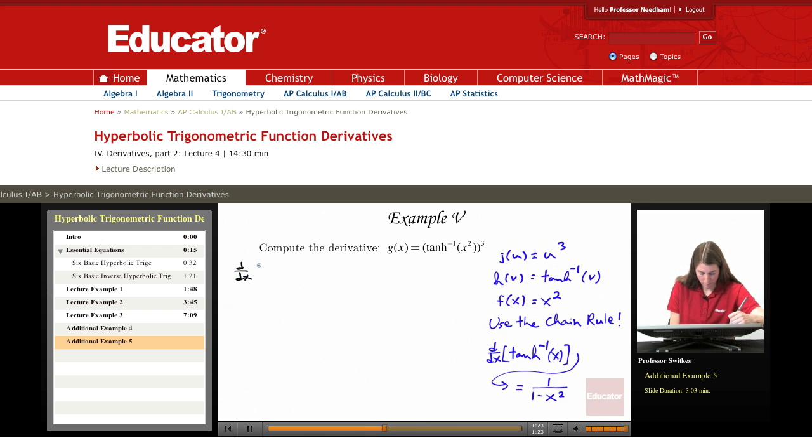we're computing derivative of inverse hyperbolic tangent of x squared whole thing cubed. And so by the chain rule, we'll have derivative of the u cubed form, three times u squared, so three times inverse hyperbolic tangent of x squared whole thing squared. That's the three u squared part.